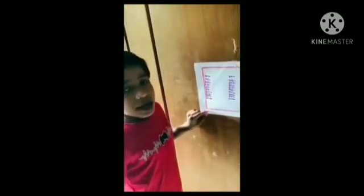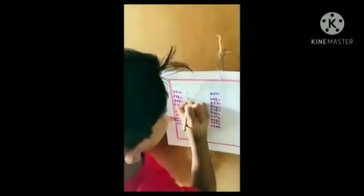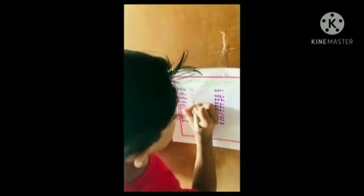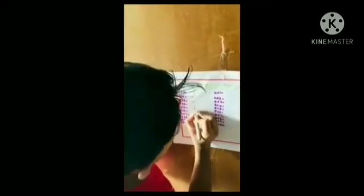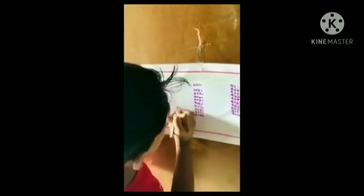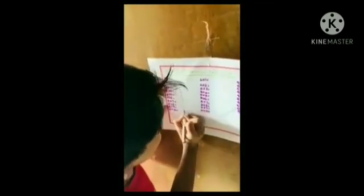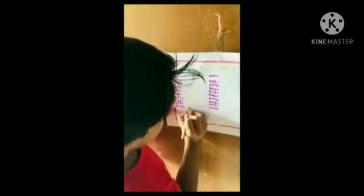Thank you. I am Mohamed Zeehan Issa. I am studying in 3rd standard. Today, I am telling you about Tricks of Multiplication Towers. 2, 4, 9. Tricks of Multiplication Towers. 2, 5, 9.